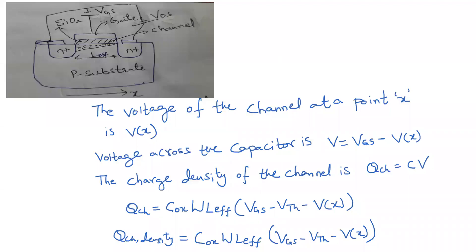Hello and welcome to the lecture on MOSFET drain current and IV characteristics. Here we can see an n-channel MOSFET with V substrate, gate-source voltage VGS, and VDS applied to the device. We have the gate and channel, and between them is silicon dioxide, which is an insulator. Because there is a dielectric material between the metal gate and the channel, it acts like a capacitor.